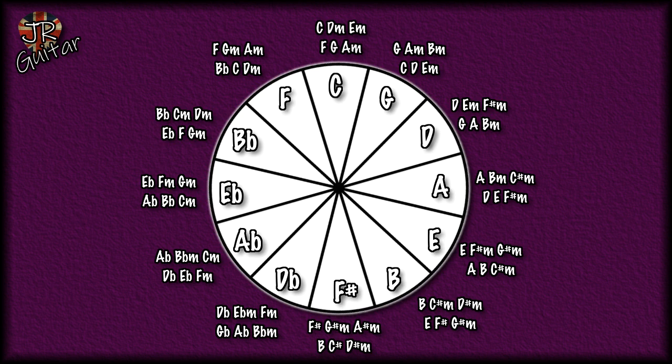On a practical level: imagine you're figuring out a song, you know you're in the key of G, but then a chord comes along that you can't figure out and it doesn't seem to be one of the chords in G. Just look at the keys either side of G on the cycle and you'll probably find that chord. The closer that keys are to each other on this dial, the more closely they are related.